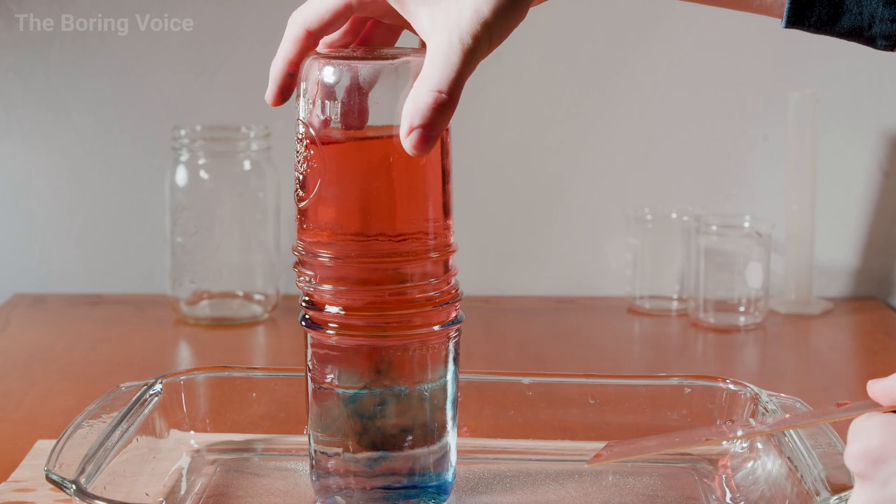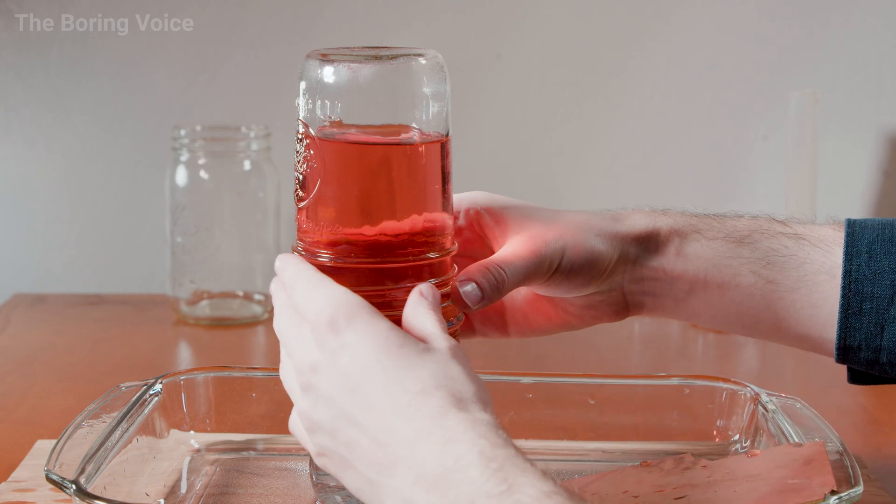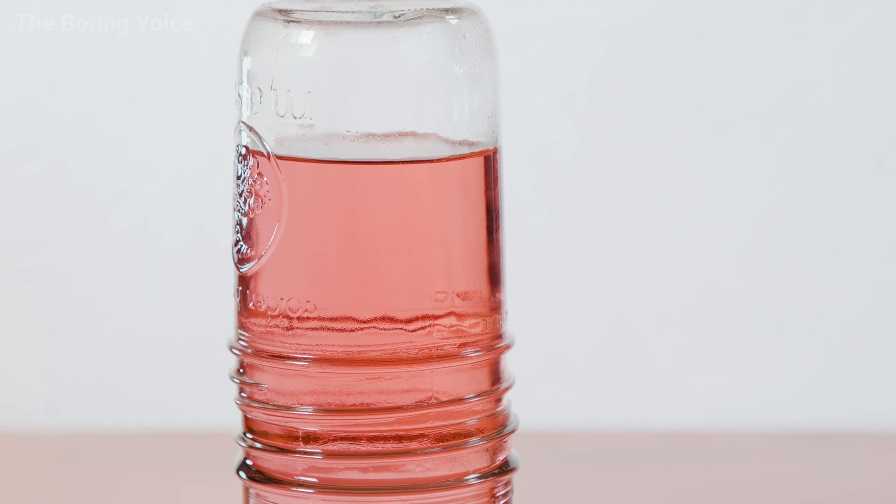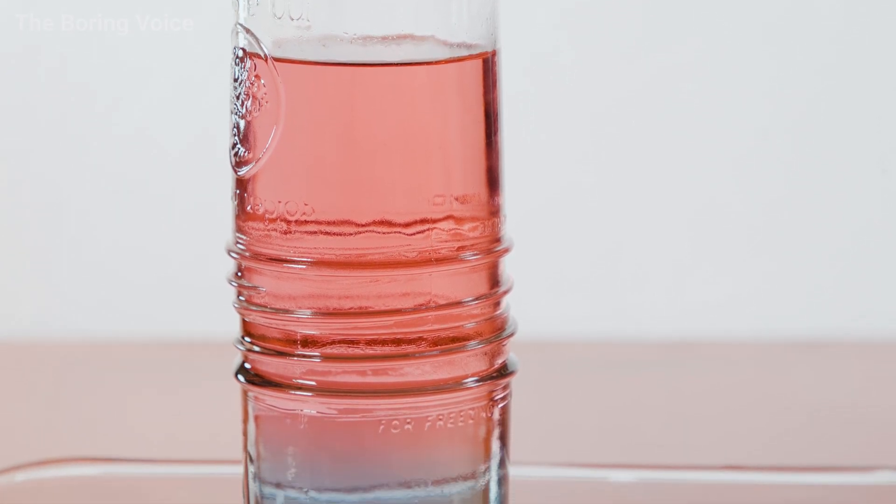Once that's done, you can actually see the water separate itself into a gradient based on density. This small difference in density allows the hot water to sit on top of the cold water.